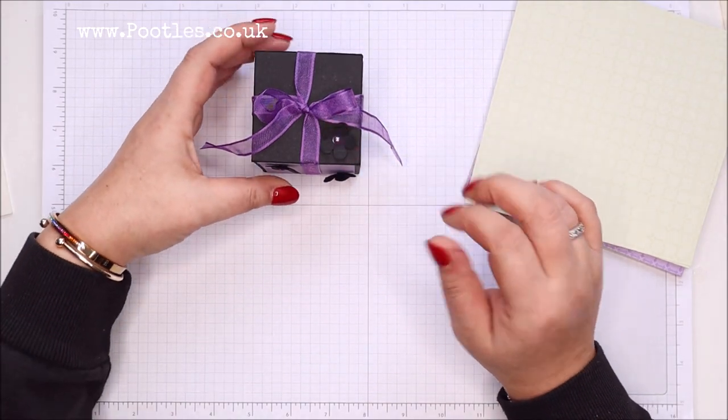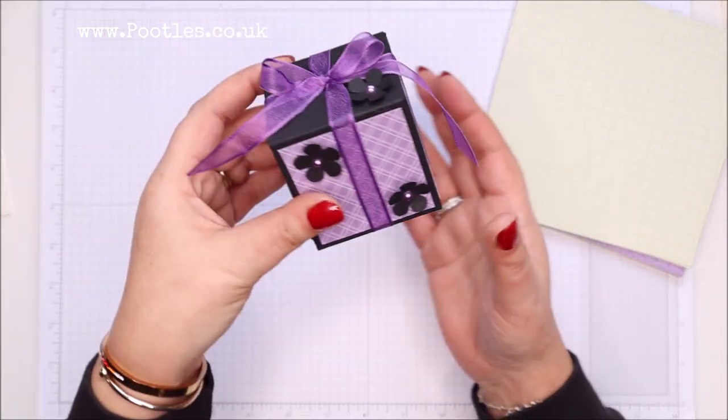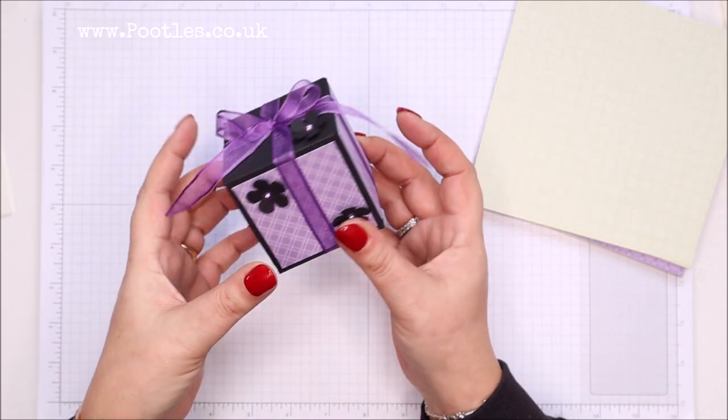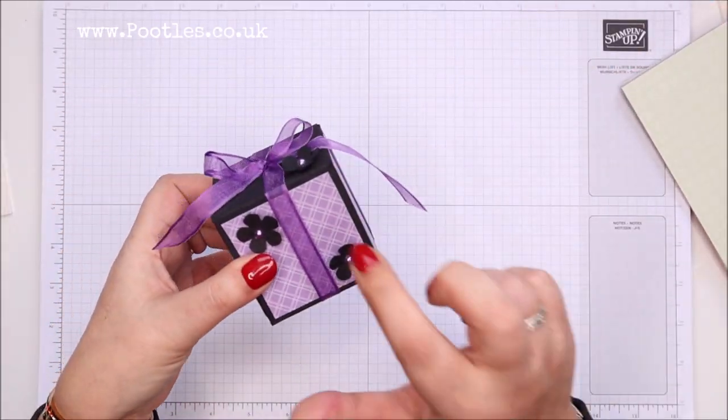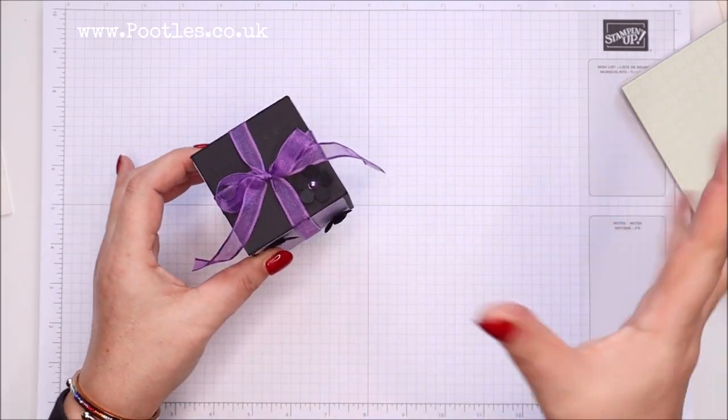I wanted to show you and so I kept my project quite simple so that it showed off the beautiful paper. This was basic black with highland heather and then gorgeous grape on here, and I'm making a variation of that.